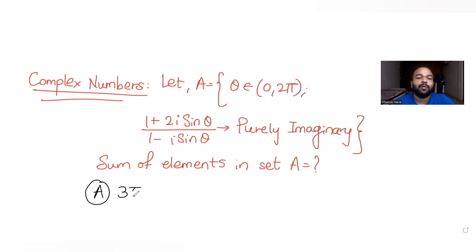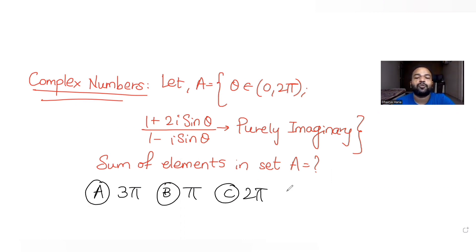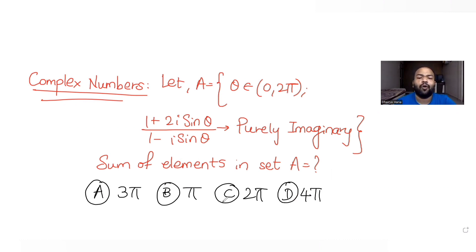The options are: 3pi, pi, 2pi, and 4pi. We need to figure out which one is the correct answer.